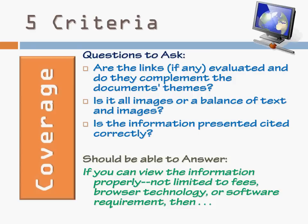The fifth and final criterion is coverage. Are the links, if any, evaluated, and do they complement the theme of the document? Is the document or the webpage all images, or is it a balance of text and images? Is the information presented cited correctly? Do they present the information sources? Are you allowed to view the information properly without having to pay any fees, or change browser technology, or get new software? How much of the page is images or animations? If you put all sorts of animations in your document, that's not necessarily reputable — it's a lot of fancy graphics and not enough content. If you can view the information properly and it's not limited to fees, browser technology, or software requirements, then you've addressed the coverage of the webpage.